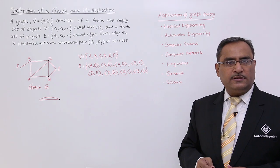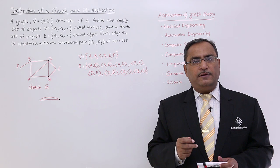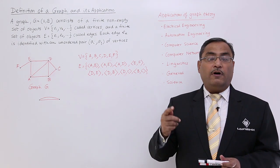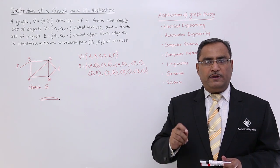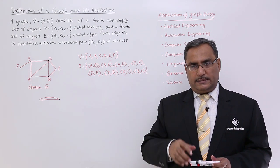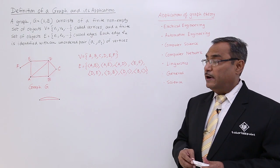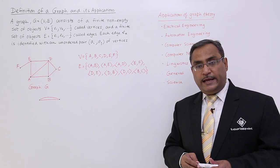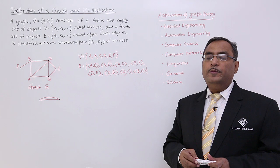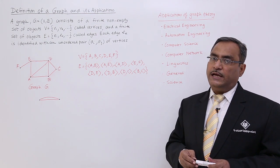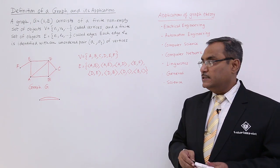That means a graph consists of two sets. One is a non-empty finite set of objects of vertices and another one is a non-empty finite set of edges. So in this way, we are having this particular graph defined and each and every edge Ek will be denoted by an unordered pair Vi and Vj, where Vi and Vj are nothing but vertices.